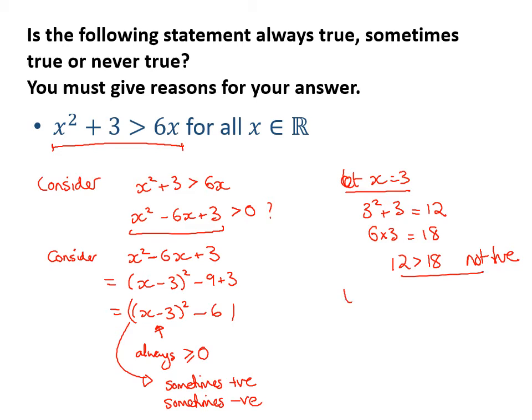And then let's consider when x equals, let's say 6. On the left-hand side, we'll get 6 squared plus 3 equals 39. On the right-hand side, 6 times 6 equals 36. So we've got 39 is greater than 36, and that is true. So therefore, sometimes the statement above is true.